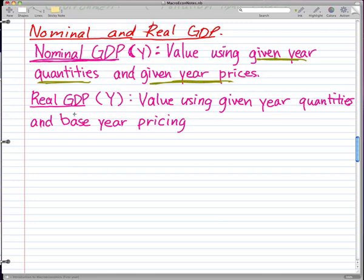For the real GDP, named capital Y, the definition is we are using values using given year quantities and base year pricing.